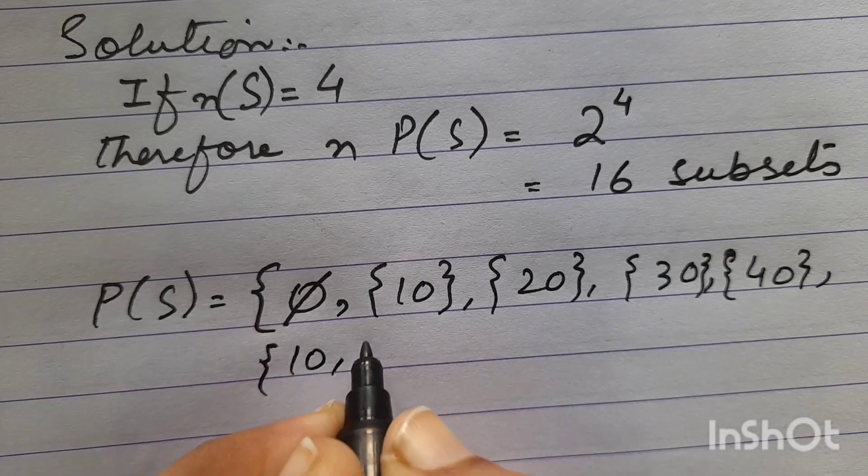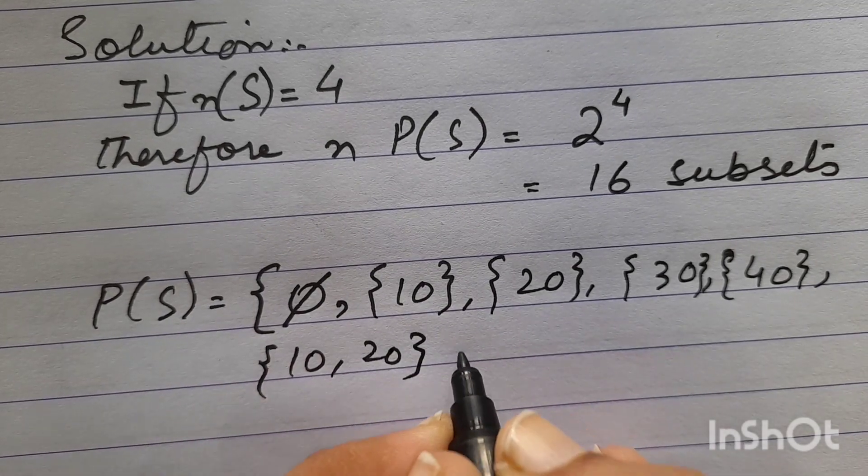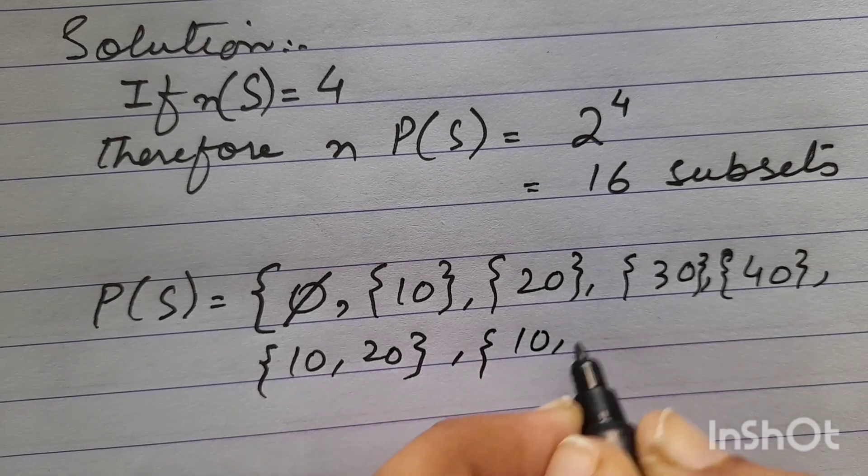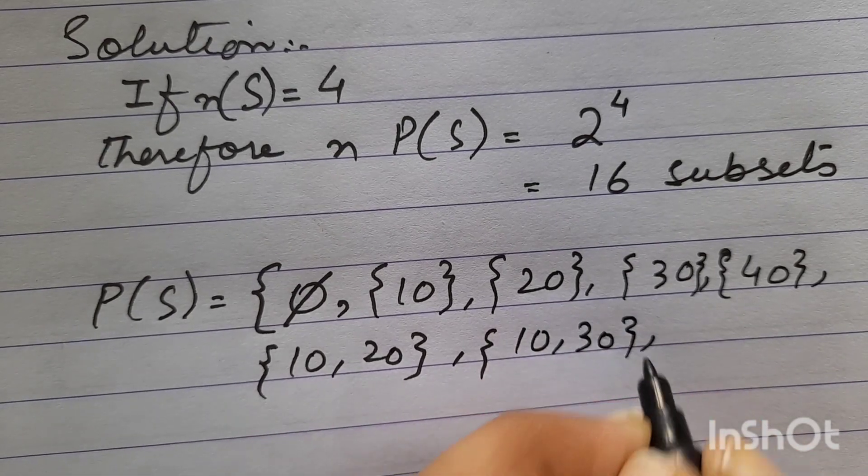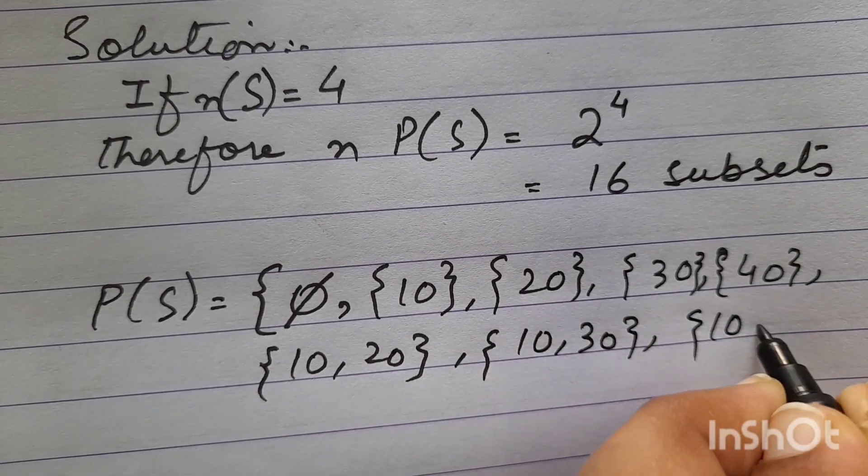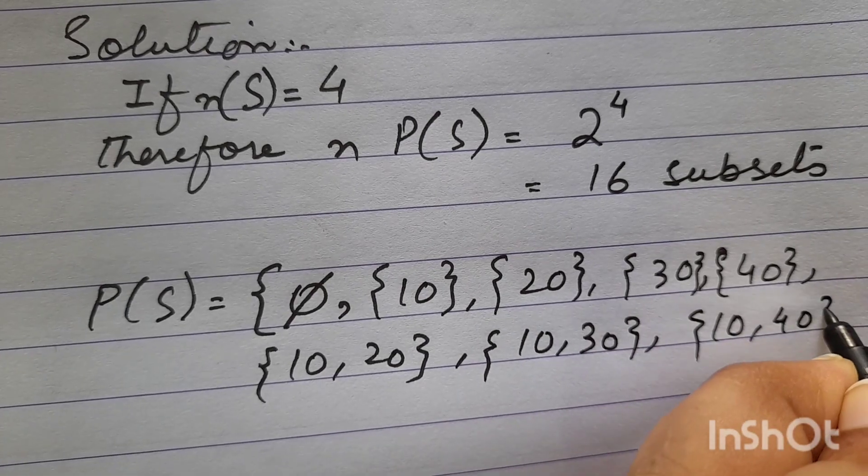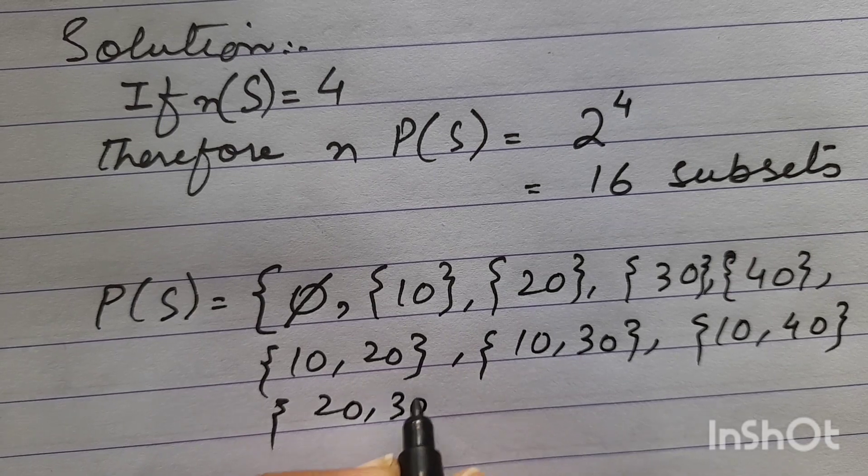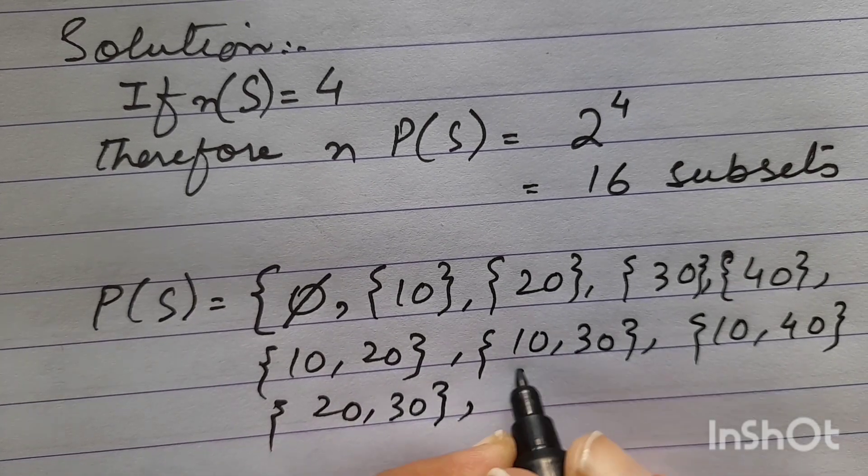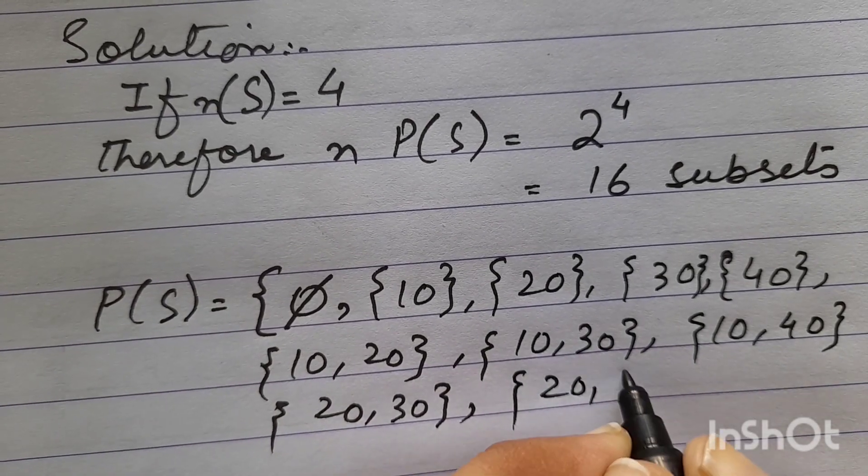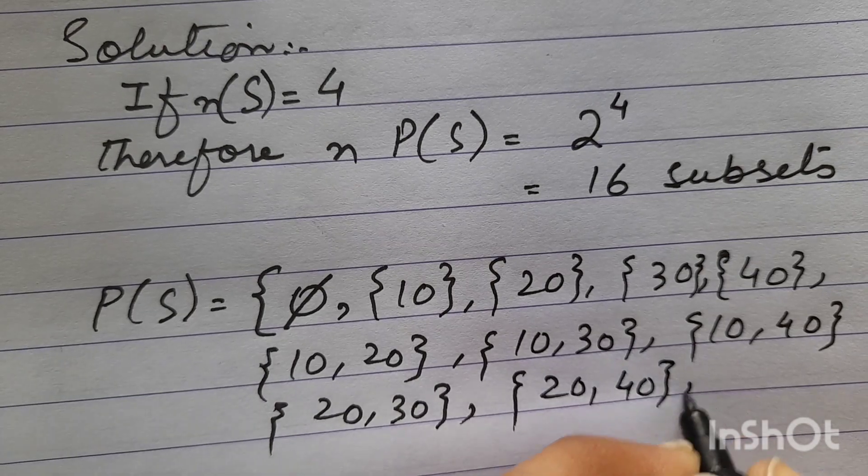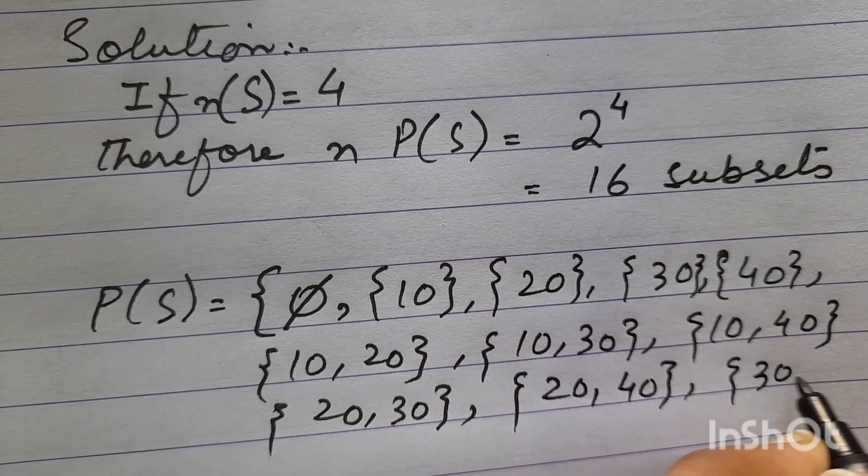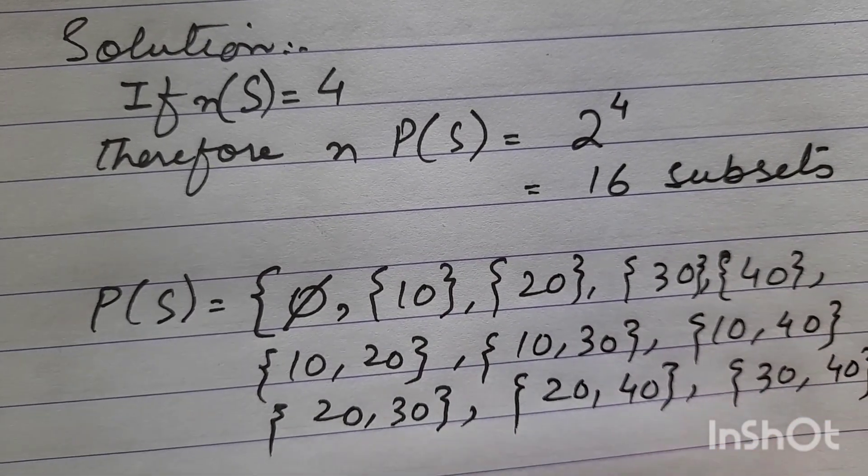So 10, 20; 10, 30; 10, 40; then 20 and 30; 20 and 40; and 30 and 40.